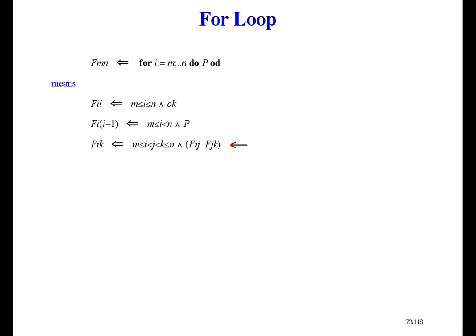The specification has to have two parameters for the iteration control, and the refinement means three refinements. Those conjuncts about M and N are optional — put them in if they help, leave them out if they don't. The first says that if there are no iterations, then OK has to do the job. The middle one says if there's one iteration, the body has to do the job. And the last one says if there are more iterations, then the job gets done by iterating to some intermediate index and from there to the end.